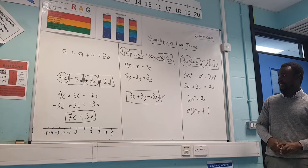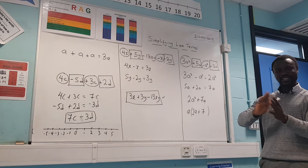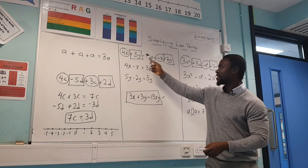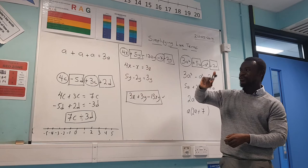That is how we simplify like terms. Always look for the common letters and circle them together. Make sure you always circle the sign as well, so you won't be confused — people sometimes mistakenly use a sign from another term. Make sure you don't make that mistake and you should get it right. Thank you.